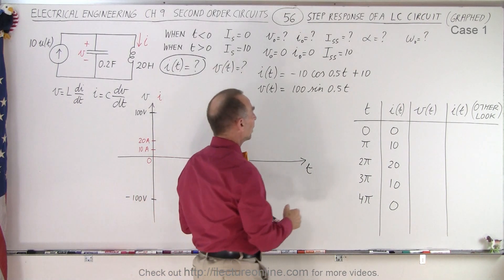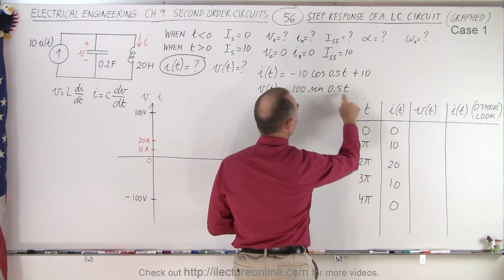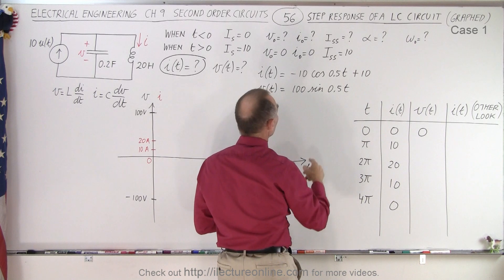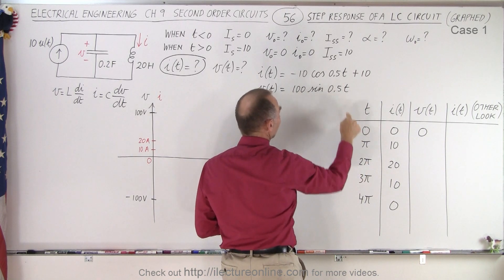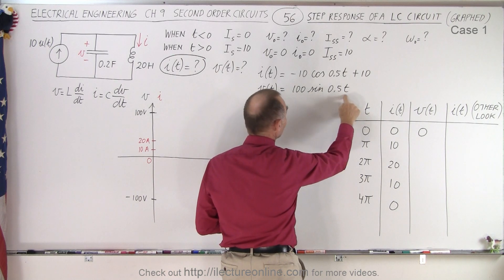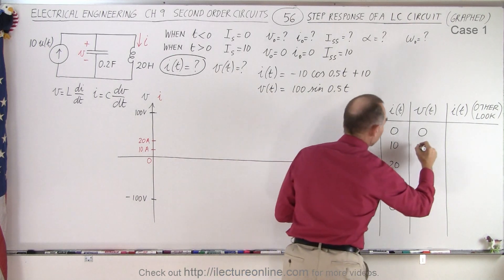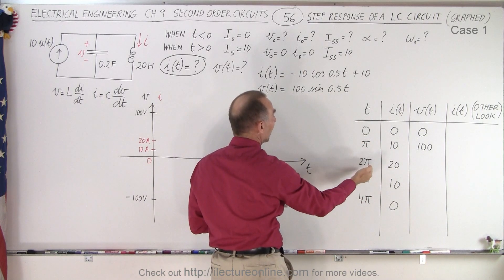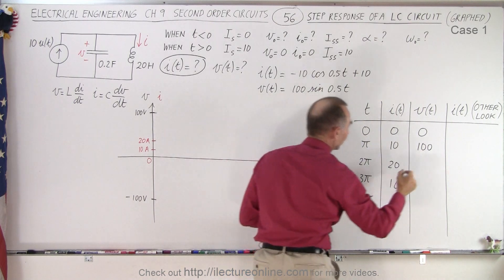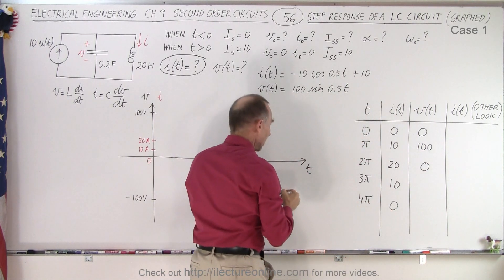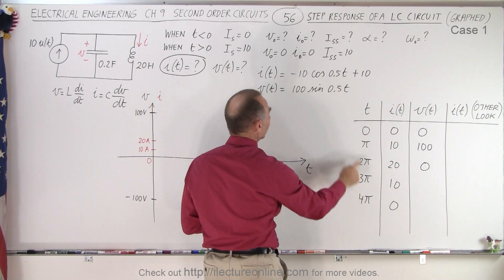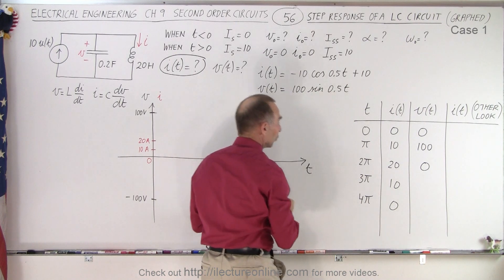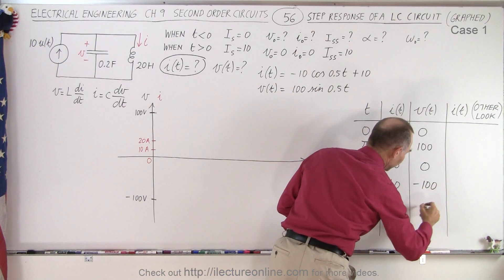Now for the voltage: when t equals 0, the sine of 0 is 0, so we have 0 volts. When t equals π, 0.5 times π is π/2 or 90 degrees, and the sine of that is 1, so we have 100 volts. When time is 2π, 0.5 times 2π is π, and the sine of π is back to 0. At 3π, 0.5 times 3π is 3π/2, which is 270 degrees, giving −1 times 100 or −100 volts, and then we return to 0.